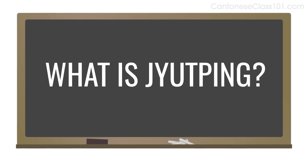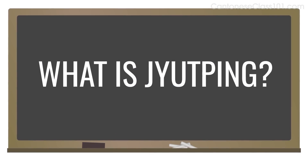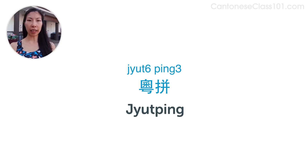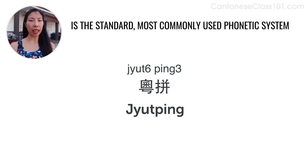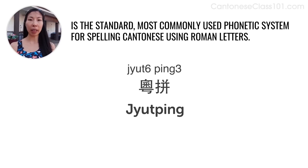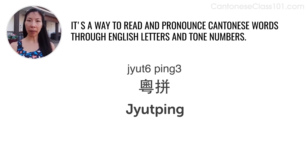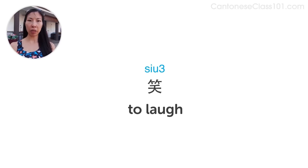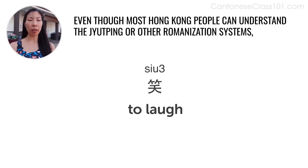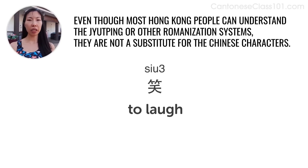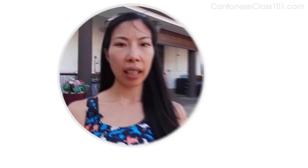Hi everybody, Olivia here. Welcome to Ask a Teacher. The question for this lesson is: what is Jyutping? Jyutping, commonly known as yut ping, is the standard, most commonly used phonetic system for spelling Cantonese using Roman letters. It's a way to read and pronounce Cantonese words through English letters and tone numbers. Even though most Hong Kong people can understand Jyutping or other romanization systems, they are not a substitute for the Chinese characters.